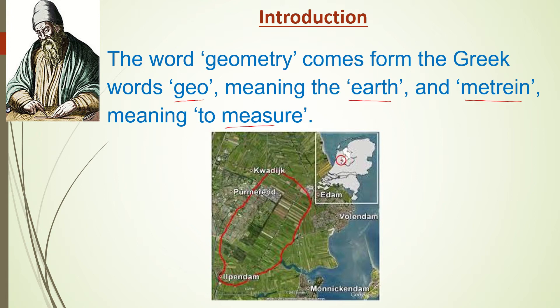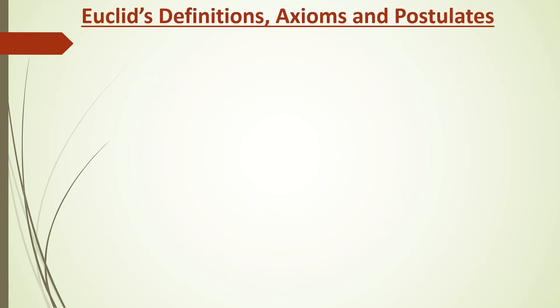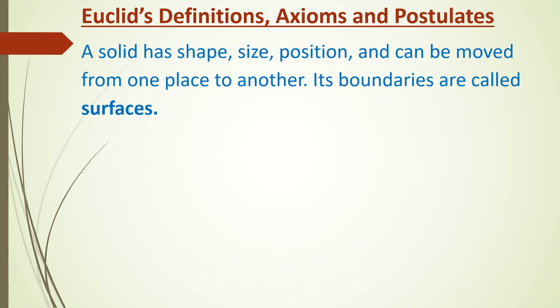Euclid was one of the first analyzers of geometrical measurements and parameters who founded the very basic definitions for geometrical entities. A solid has shape, size in terms of three dimensions, position, and it can be moved from one place to another. The boundaries of a solid are called surfaces.